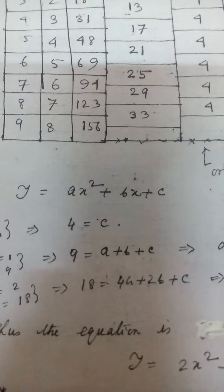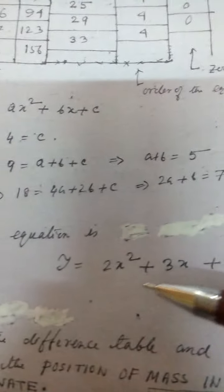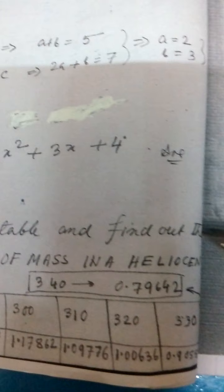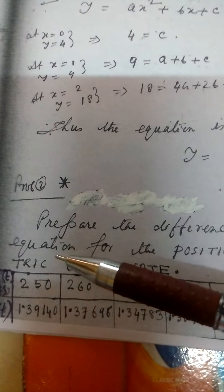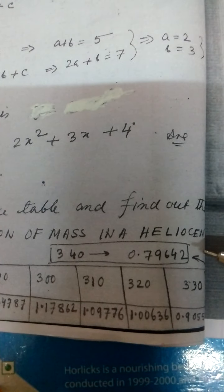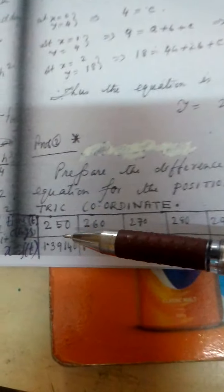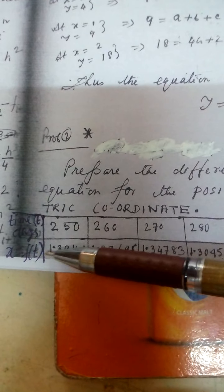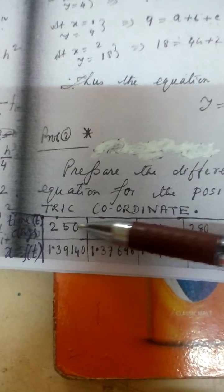Now I will give you another problem. The question is: prepare the difference table and find out the equation for the position of mass in a heliocentric coordinate. The function is x as a function of t, where t is the independent variable.